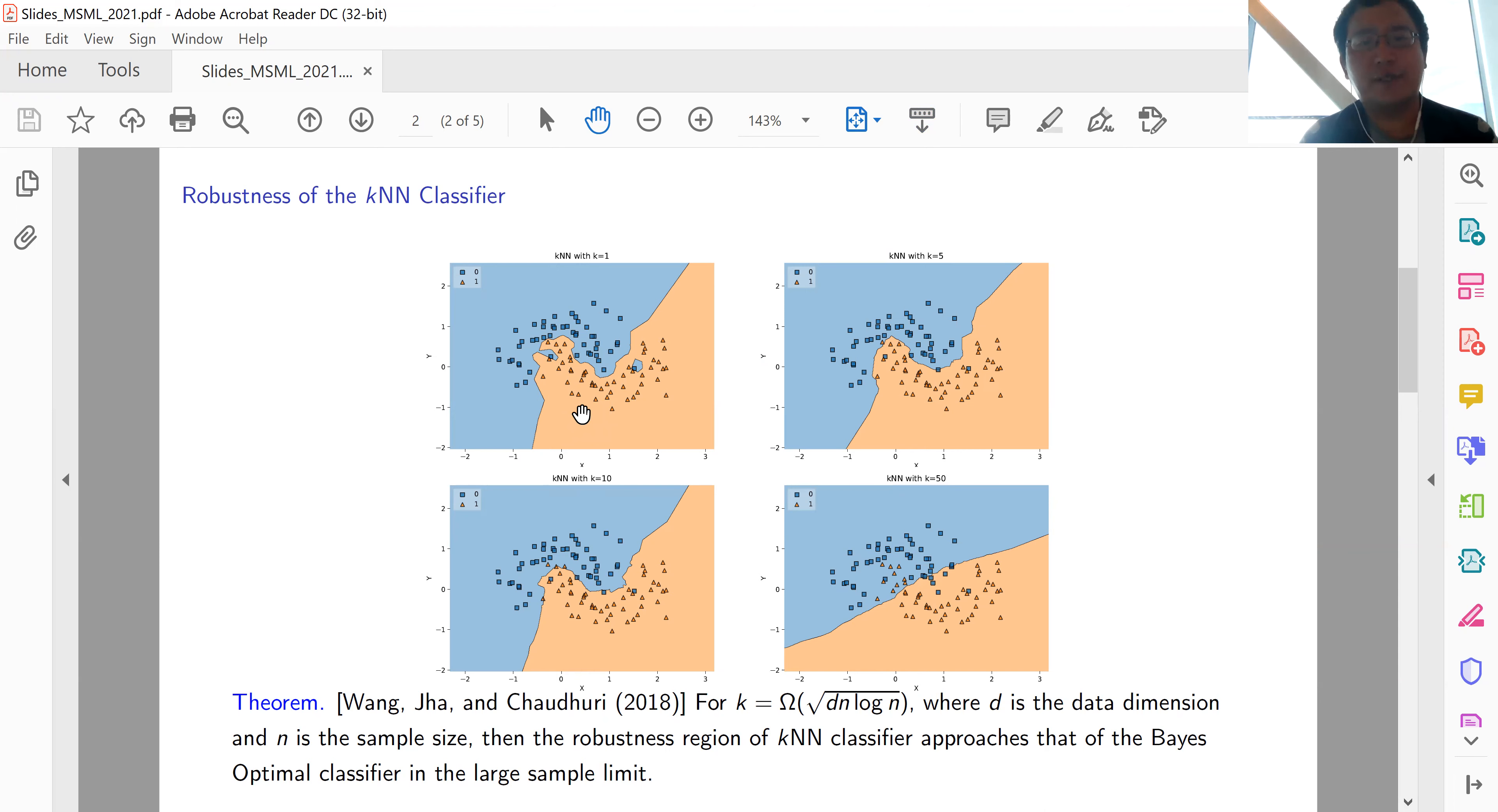This leads us to think about the robustness of k-nearest neighbors. How can we quantify it? There is a theoretical result which states that when k is big enough—as big as d times sqrt(d) times n times log(n), where d is the data dimension and n is the sample size—then the k-nearest neighbor will be robust, as robust as the Bayes optimal classifier in the large sample limit.